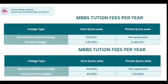For dental: government dental college fees are 40,000. Private quota seats are not applicable for government dental colleges. For private dental colleges the fees are 83,358, and for private quota seats in private dental colleges it is 7,32,625. Engineering, dental, and MBBS fee structures are now clear. For BSc Agriculture, if you get a government aided seat it is 44,311, and unaided is 1,13,000 to 1,22,000.